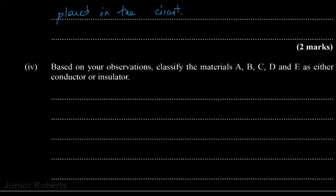Then it says: based on your observations, classify materials A, B, C, D, and E as either conductor or insulator.